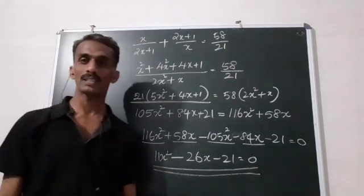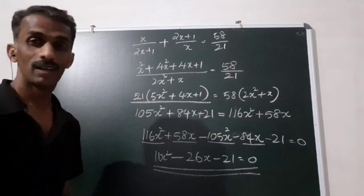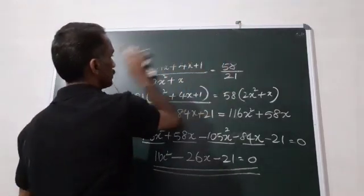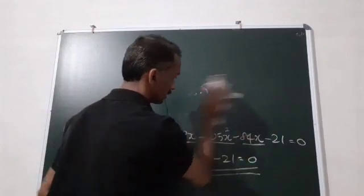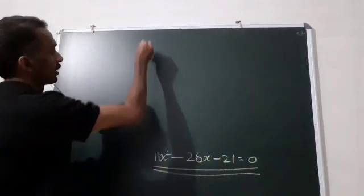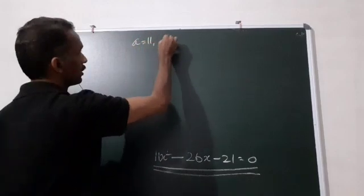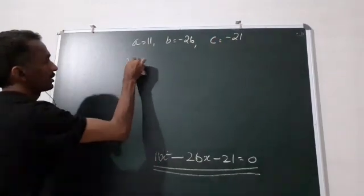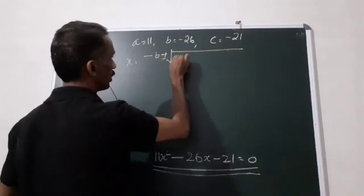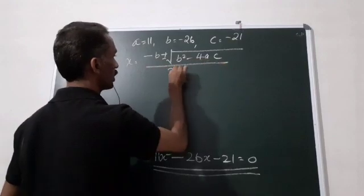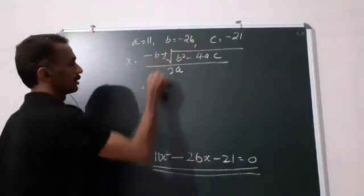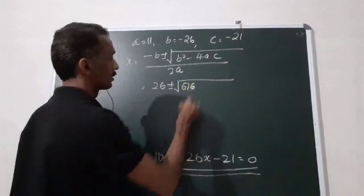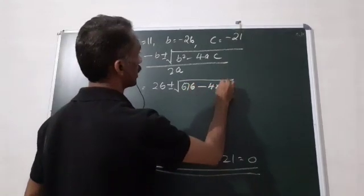Now we can find the value of x using the quadratic equation. This is the quadratic equation where a equals 11, b equals minus 26, and c equals minus 21. Applying the quadratic formula: x equals minus b plus or minus root of b squared minus 4ac divided by 2a.